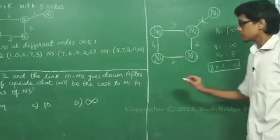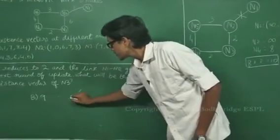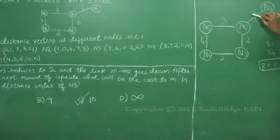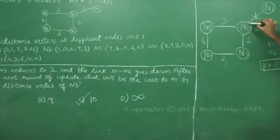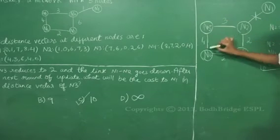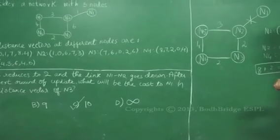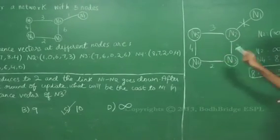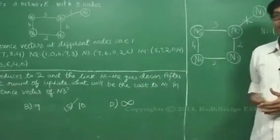So the correct option is Option C: 10. The main thing to note is that even though the link between N1 and N2 has gone down, for the change to be reflected in all nodes it takes more than one round of updates. The infinity hasn't been propagated to N4 yet, so N3 gives 10 as the answer even though the actual path no longer exists. Option C, 10, is the right answer.